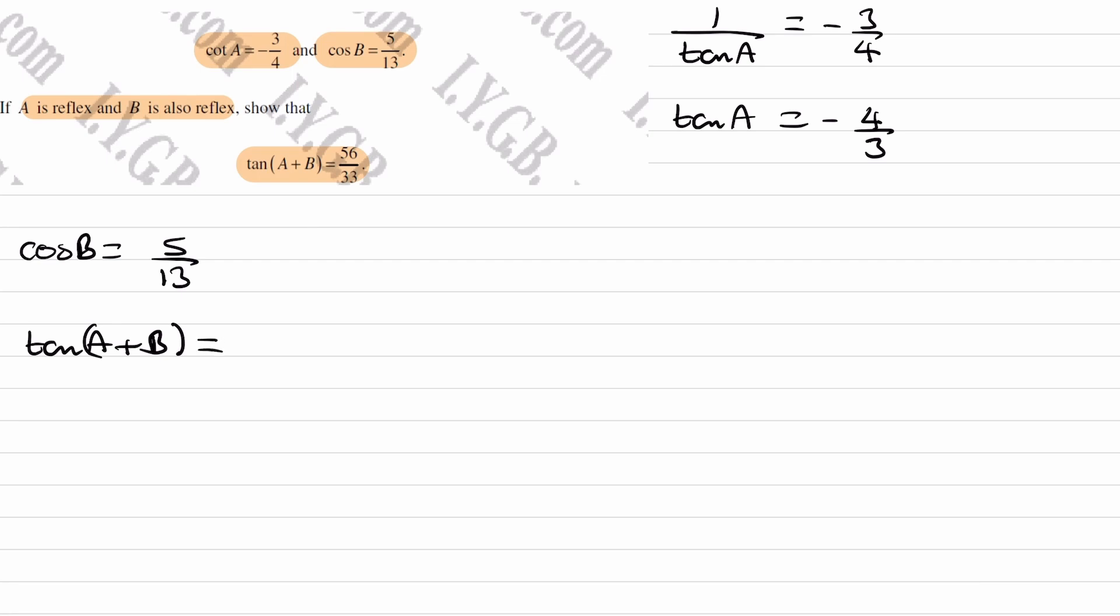We can use the addition formula to turn this into tan A plus tan B all over 1 minus tan A tan B. That's useful because now we can sub in tan A and tan B into this, but we need to work out what tan B is first.